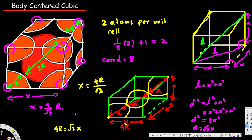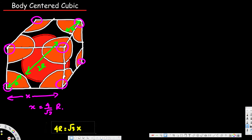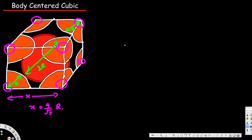Now let's see what percentage of the cube's volume is occupied by the atoms. For a body centered cubic structure, 68 percent of the volume is occupied by atoms. To prove this, we need to calculate v_atoms over v_cube — that ratio gives us the percentage of volume occupied by the atoms.